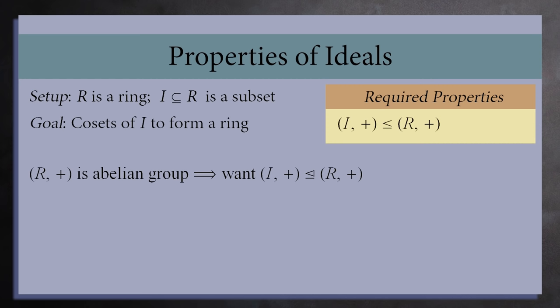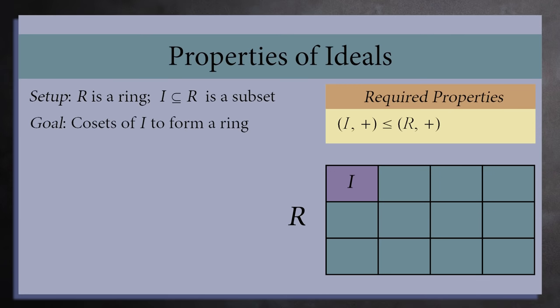I must be an additive subgroup of R. Since I is a subgroup, we can cover R and its cosets. There may be a finite or infinite number of cosets.